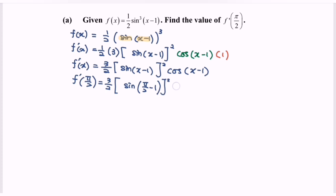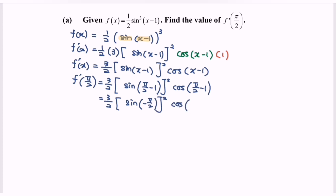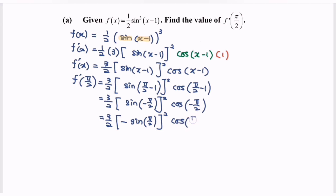Then we have cos(pi over 2 minus 1). Simplifying: 3 over 2 times sine(negative pi over 2) squared, times cos(negative pi over 2). Simplifying further: 3 over 2 times negative sine(pi over 2) squared. As for cos(negative pi over 2), the situation becomes cos(pi over 2).